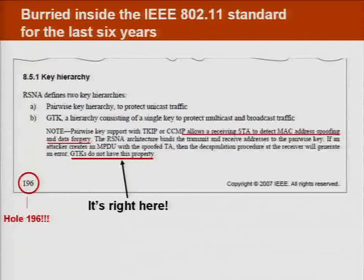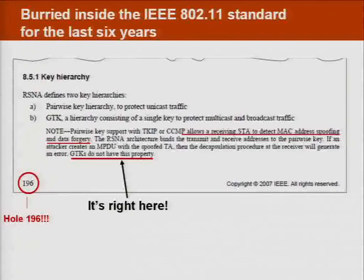If you see the last line of page 196, the designers of 802.11 have warned about a weakness of WPA2 — one key that is used in WPA2. On that last line there is something mentioned about that key: 'GTKs do not have this property.' So the designers are talking about a property of the encryption key which is lacking. But this problem was never discussed and was never brought to the attention of WPA2 users.